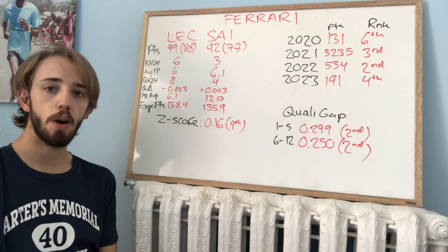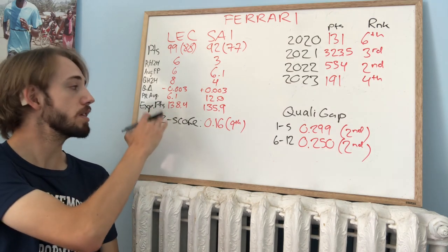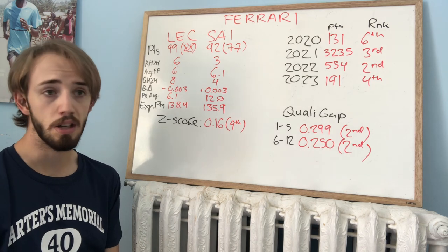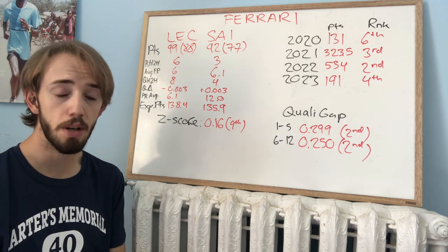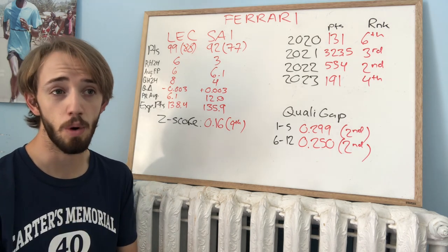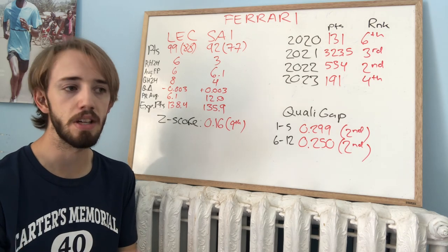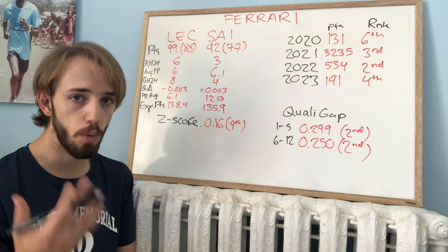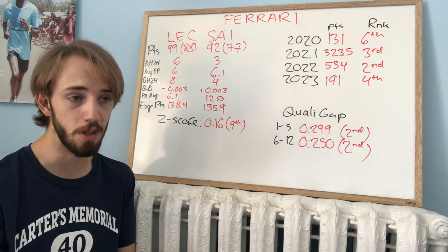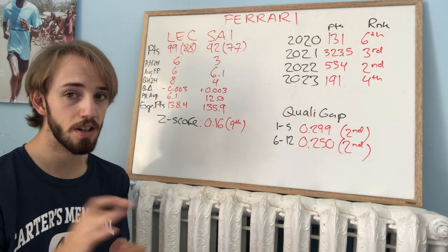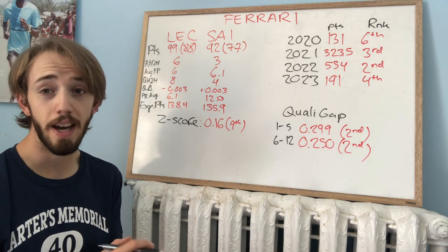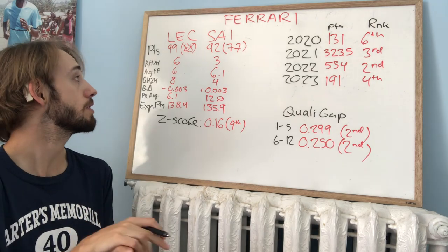Looking at my average on the power rankings, 6.1 for Leclerc and 12.0 for Sainz. I do feel like Leclerc's done pretty well for himself this year. Had quite a bit of bad luck at the beginning of the year. That DNF from the opening race in Bahrain, forcing him to take a grid penalty the second race of the season, definitely did not help matters. But that being said, I do feel like there has been a little bit of room for improvement for Charles.